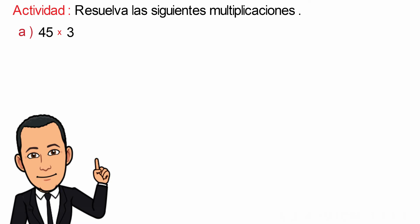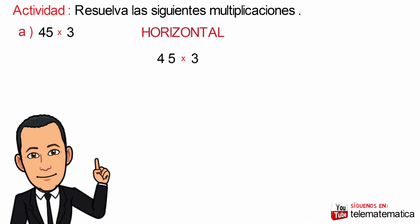In a previous video we already saw the procedure to perform the multiplication of a natural number by another with one digit. So taking this into account, we will remember the process. As a first option, the horizontal multiplication, which consists of writing the operation horizontally and solving.